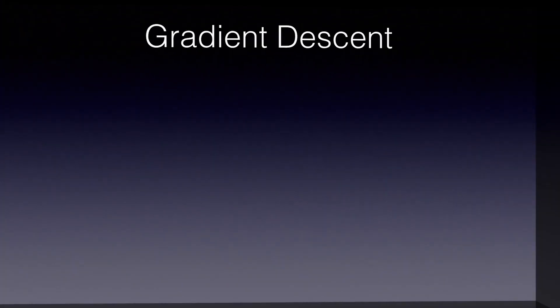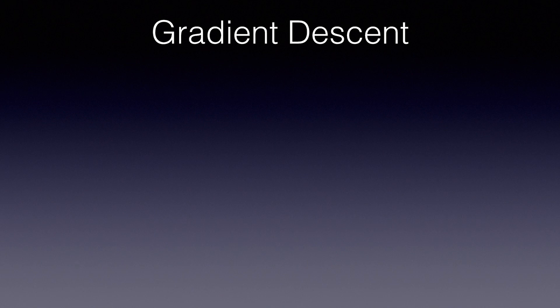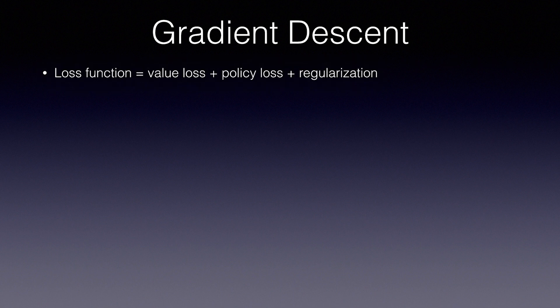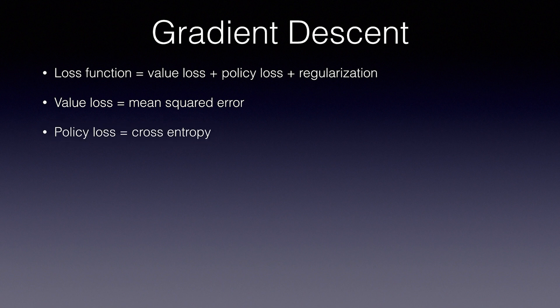Last, let's have a look at the loss function and the gradient descent method. This is very similar to how we trained our actor-critic. The loss function has three elements: the value loss, the policy loss, and regularization. Value loss is the mean squared error between the value predicted by the network and the actual value calculated through the Monte Carlo tree search. Policy loss is the cross entropy between the probabilities predicted by the network and those calculated through Monte Carlo tree search. If you're confused about this, go back and study my policy gradients math primer — there's a link in the description of my policy gradient methods video.